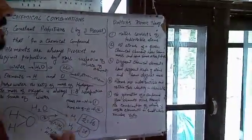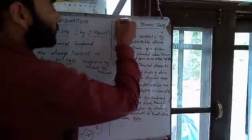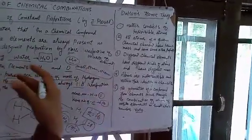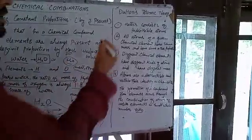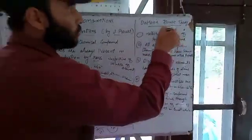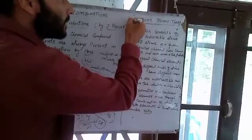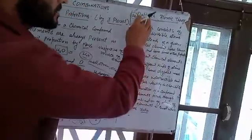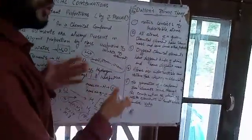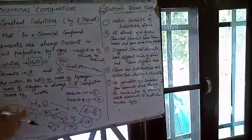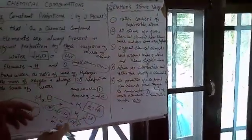Now the next subtopic is Dalton's atomic theory. John Dalton was a scientist who described the atom and postulated statements regarding it. This theory is known as Dalton's atomic theory, given in 1803 or 1808. There are five postulates in this theory through which we can infer the laws of chemical combinations.